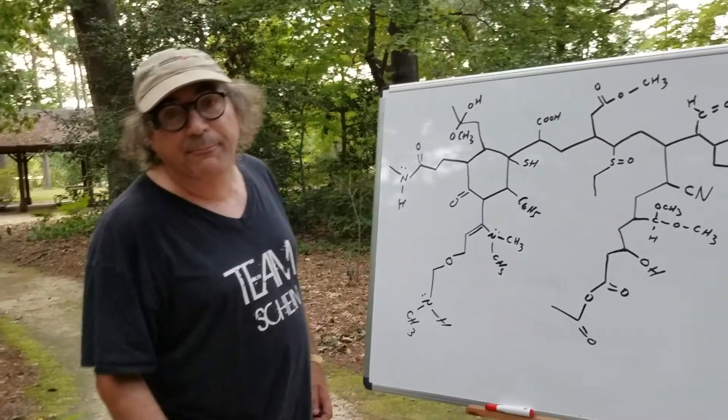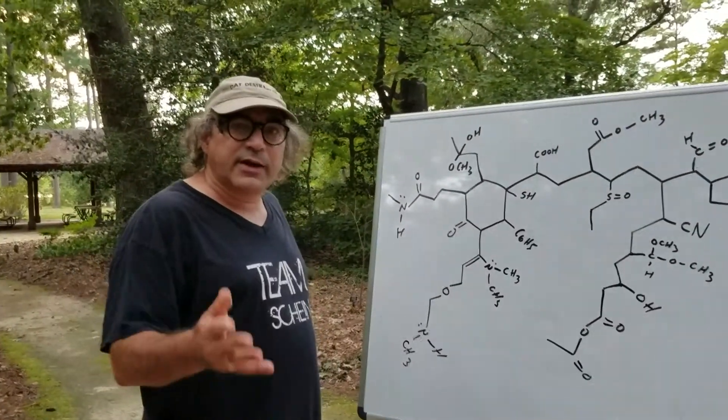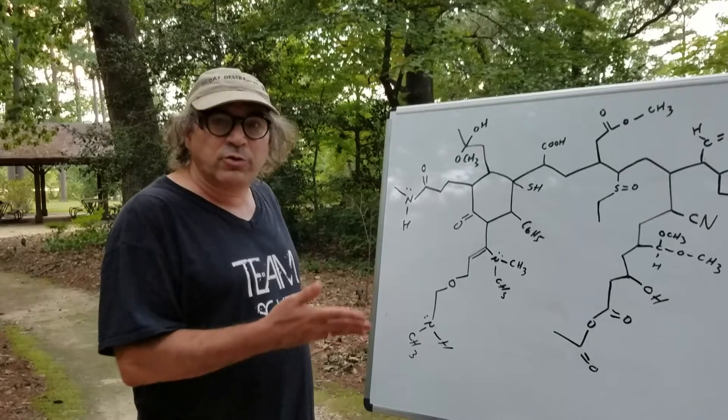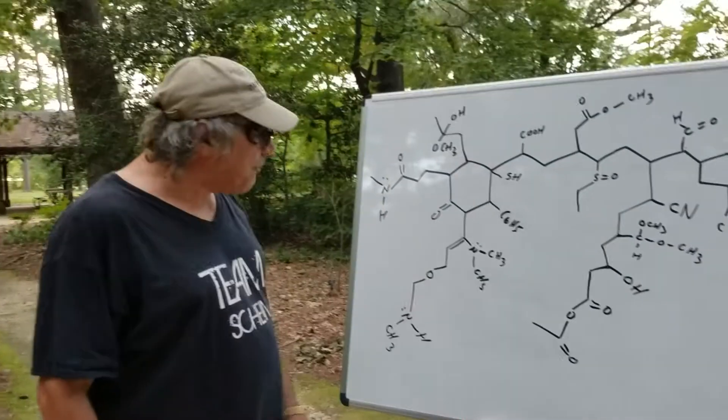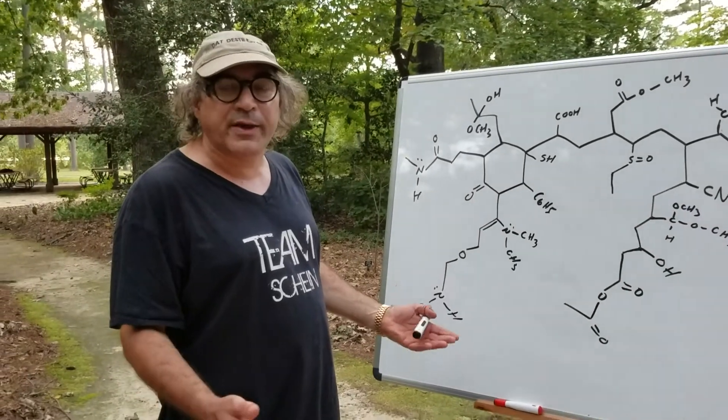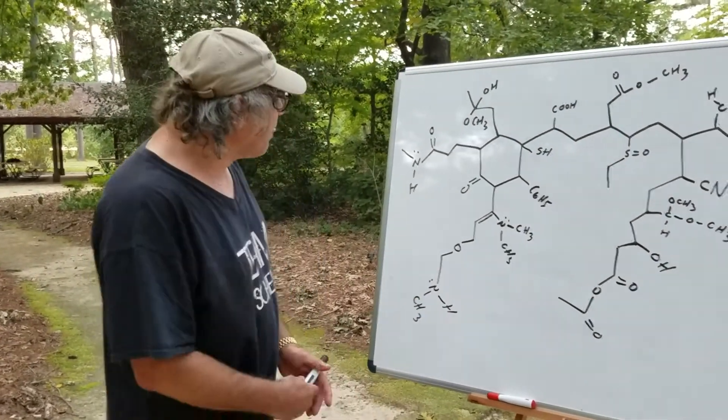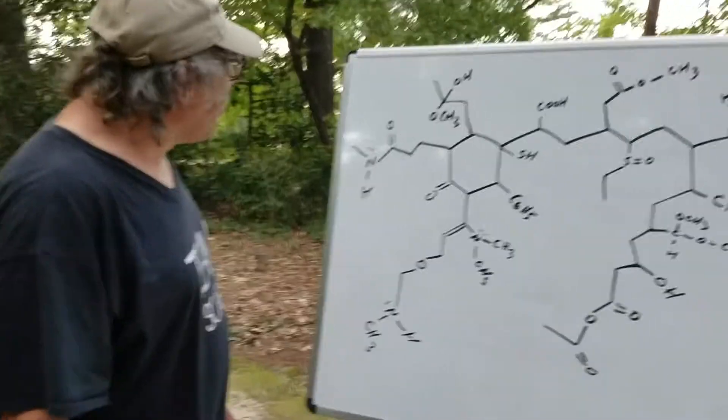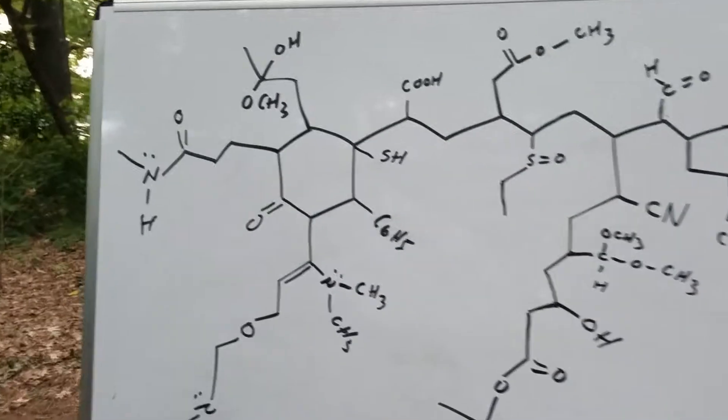Instead of me writing on the blackboard like I normally do, I'm going to give you a chance to write down what you think the correct answer is. So I'm going to point to a group and you're going to say to yourself what the name of that group is and let's see how you're going to do. Do I get a prize if I get them right? You get no prize.